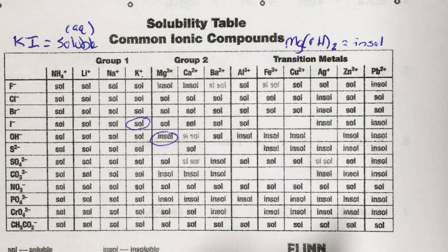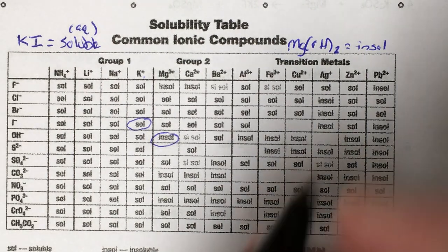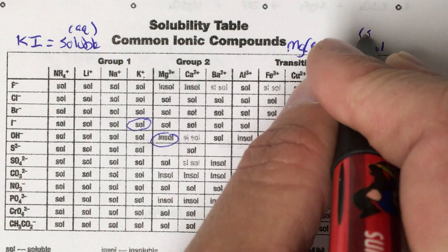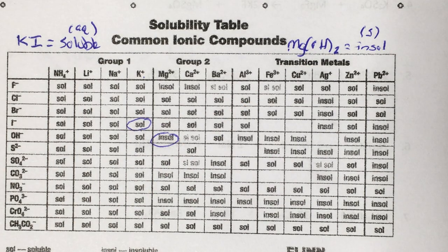Now what insoluble means is it won't dissolve in water. So if this were a chemical reaction, this would stay in a solid state. And so we would abbreviate it S.